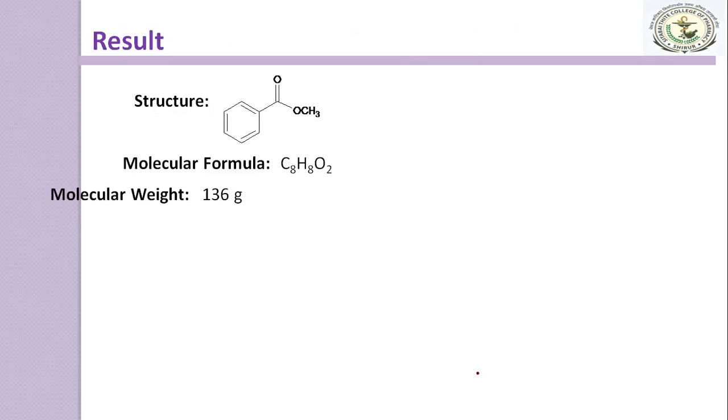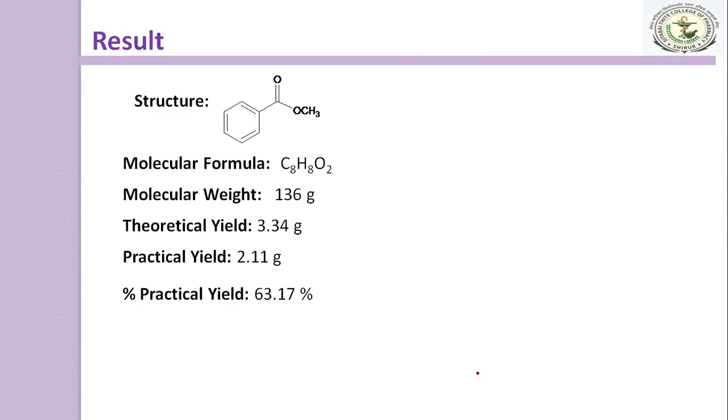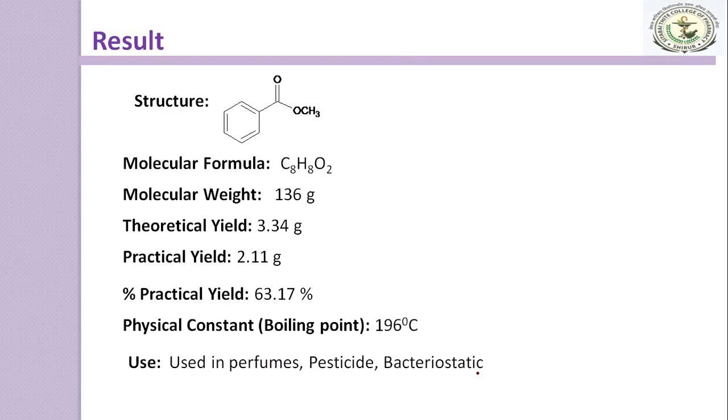Next is the result. Draw the structure with molecular formula C8H8O2, molecular weight 136 g, theoretical yield 3.34 g, practical yield 2.11 g, percent practical yield 63.17%, physical constant boiling point 196 degrees centigrade, and uses. It is used in perfumes, as pesticide, and has bacteriostatic action.